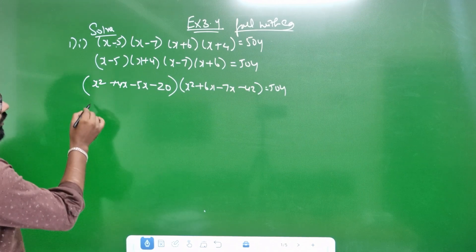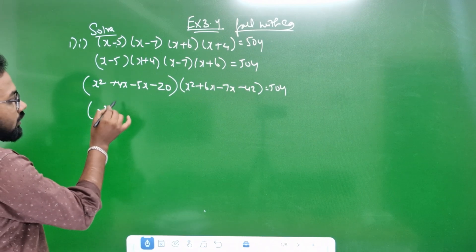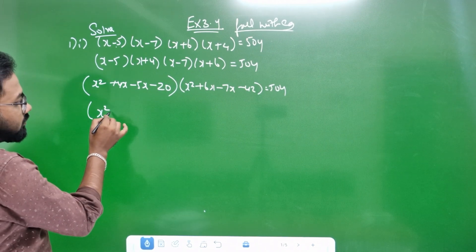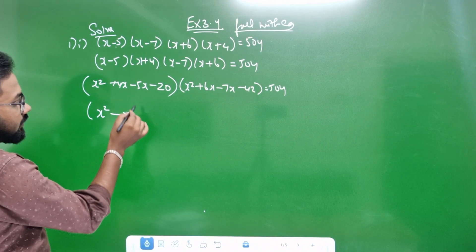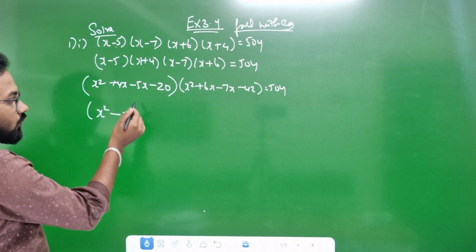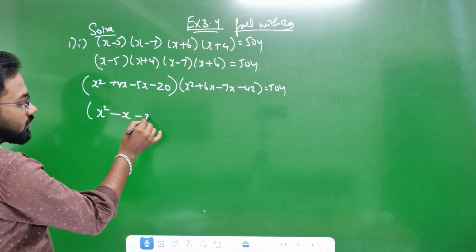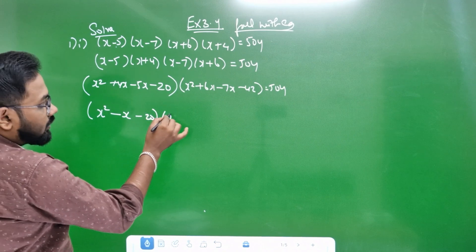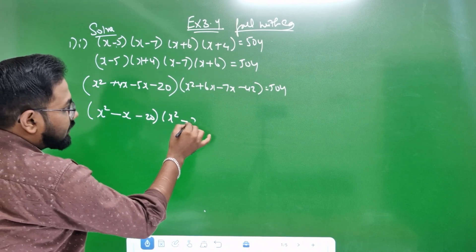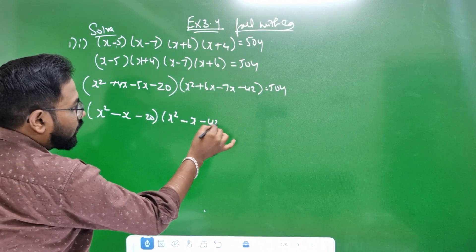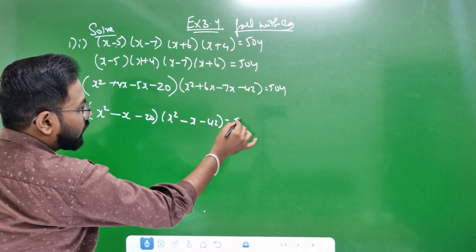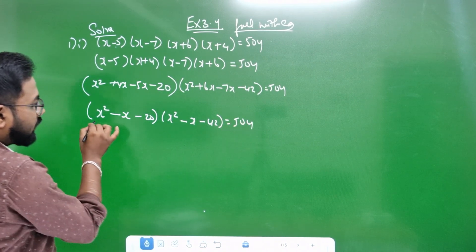So, x square, 4x minus x. 5x minus 4x is x, minus x is minus 20. x square minus x minus 42. This is why we have grouping. This term is one.